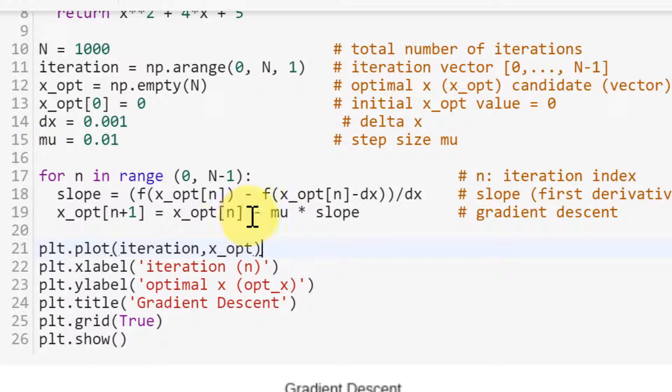Basically, we want to move in the negative direction or the opposite direction of this slope. So if the slope is negative, then this value will become positive. So this one will be greater than this. Or if the slope is positive, this value will be negative, and this will be smaller than this.